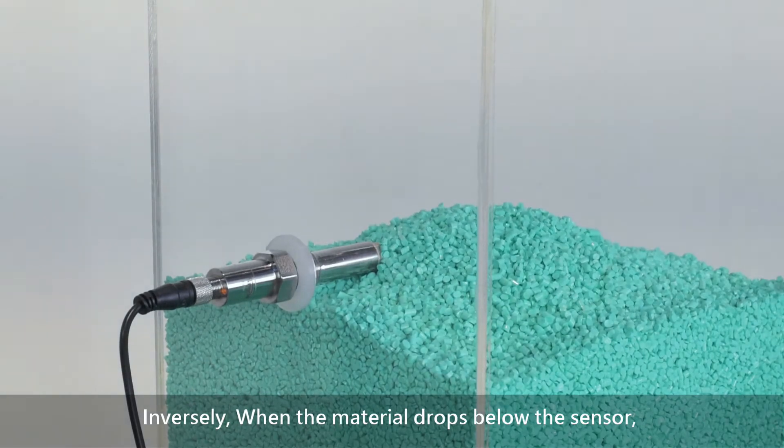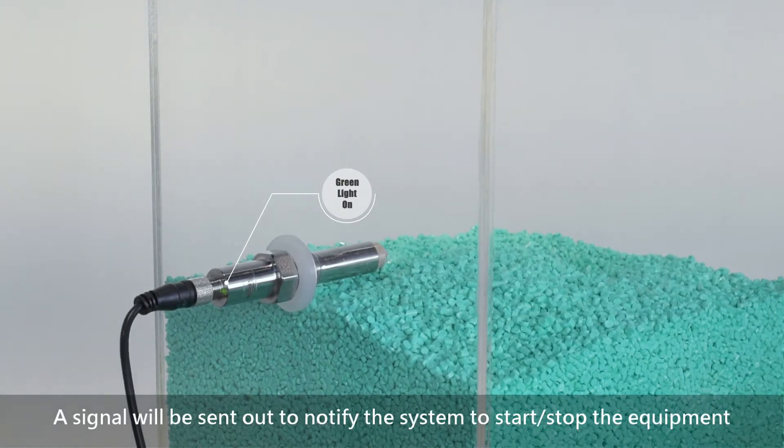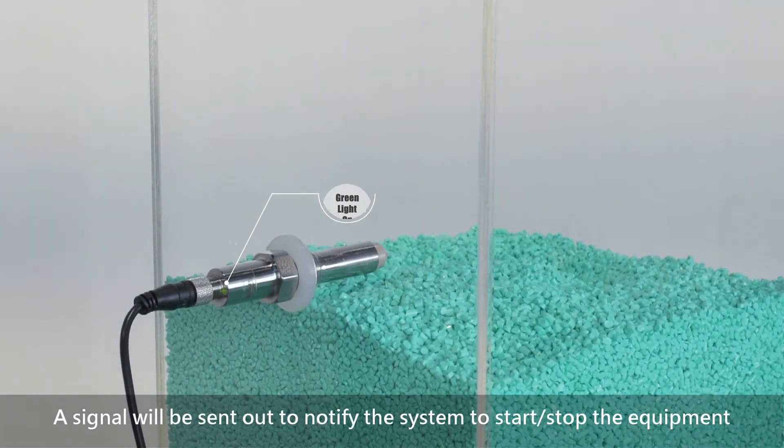Inversely, when the material drops below the sensor, the light will change to green in color. A signal will be sent out to notify the system to start or stop the equipment.